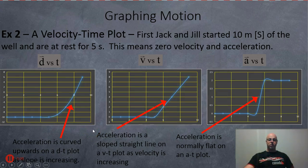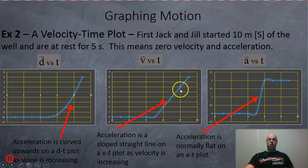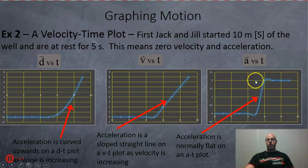Plugging that into our graphs — I did this on a computer so it's not perfect, it's got a few curves where it shouldn't. On the position-time graph: flat line, then a nice curve for acceleration. The velocity-time graph is flat, then shoots up in a straight slope to show the acceleration. On the acceleration graph: flat line, then instantly up to a flat line at two meters per second squared.